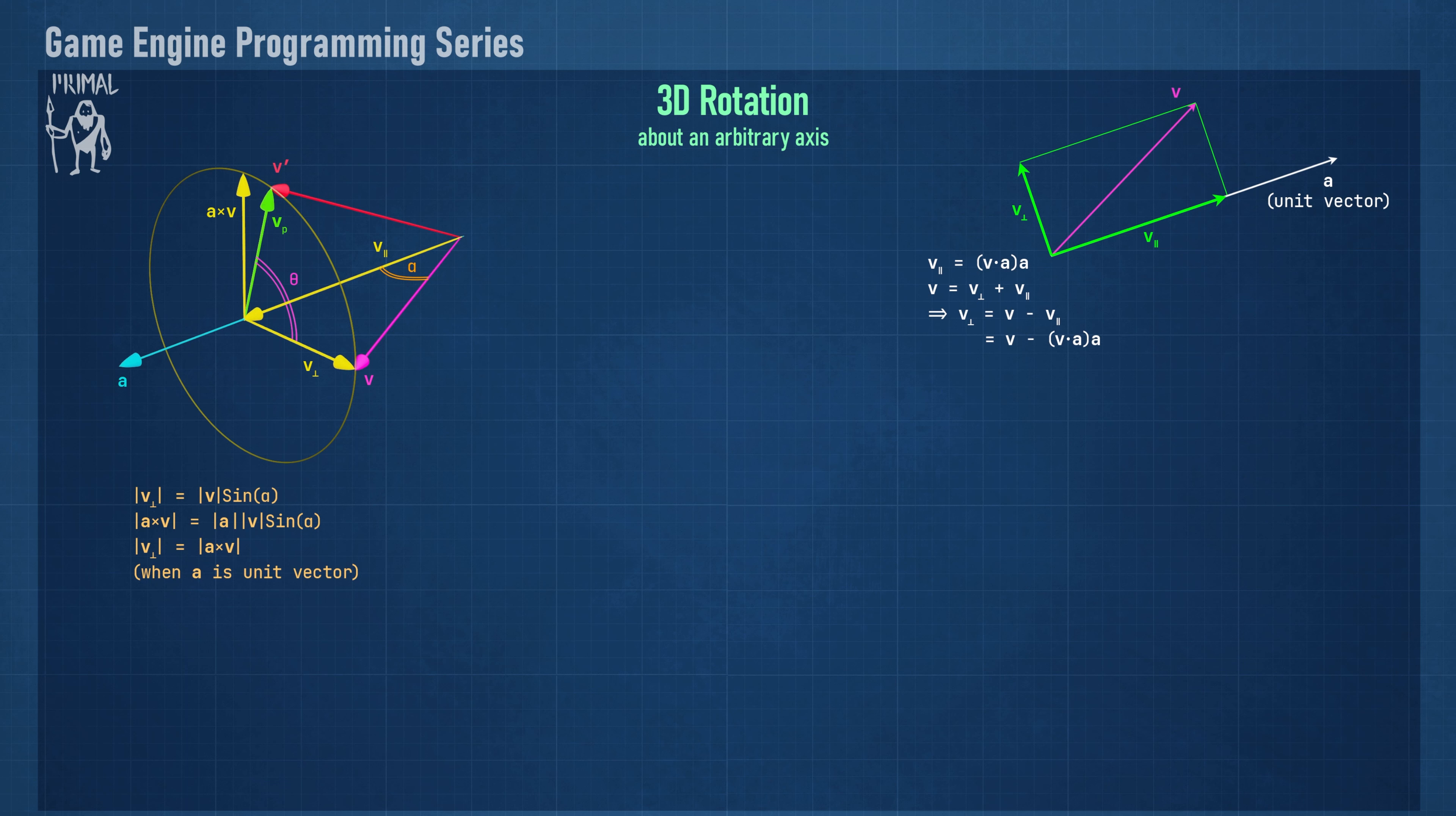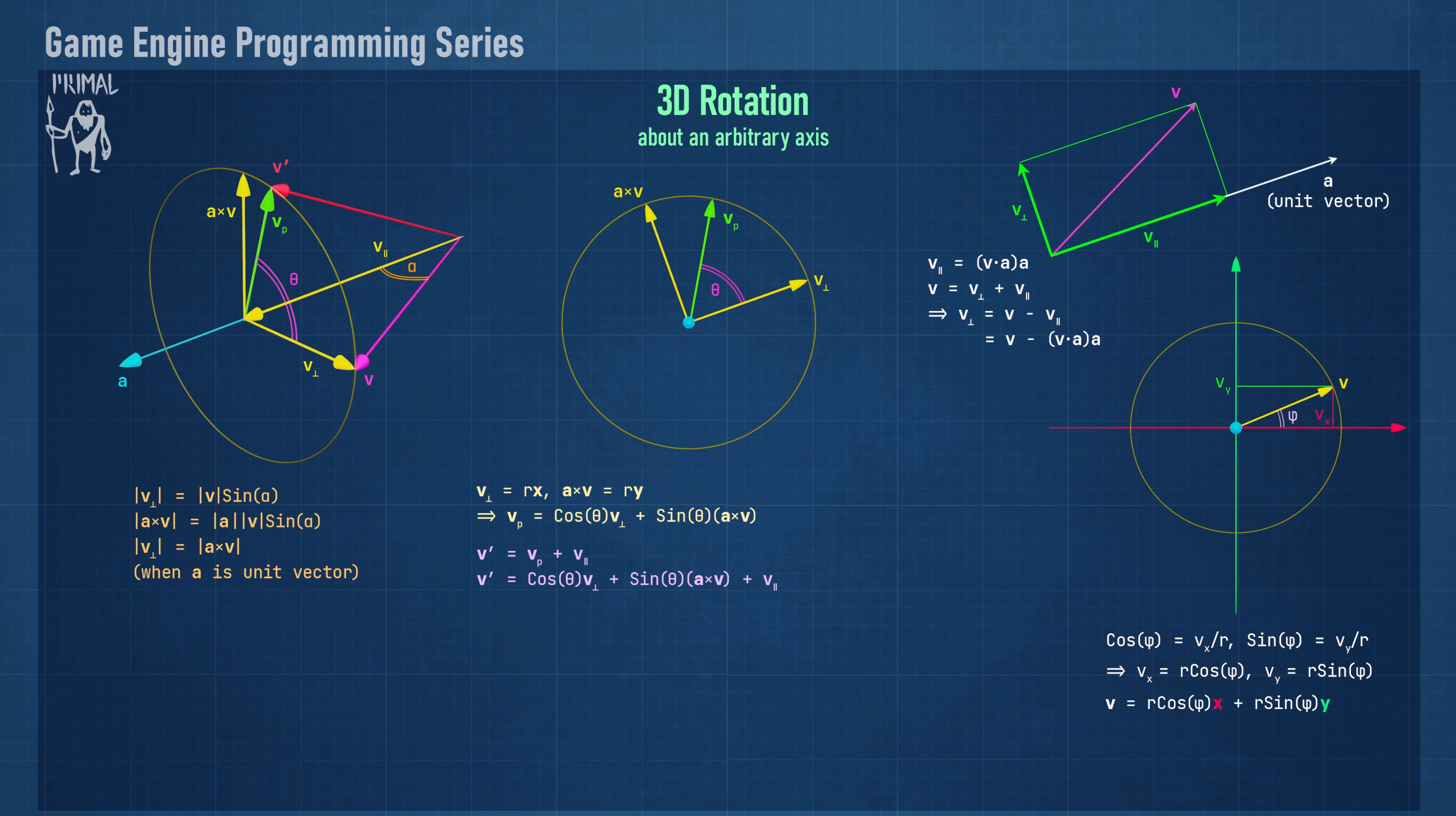Rotating vector v by theta around a will transform v to v prime. It will also transform v perpendicular to v p. Looking at the rotation plane, we see a picture that's quite similar to what we had earlier where we studied the rotation of v in the xy plane, except now the x axis is replaced by v perpendicular and the y axis is replaced by the cross product of a and v. Another difference is that now our new axis contain the length information of the vector, whereas x and y axis were unit vectors. For this reason, we don't have to include the length of vector vp in the trigonometric notation.